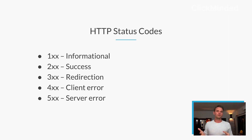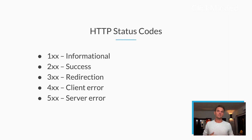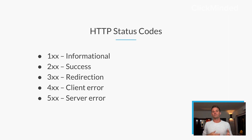The 100 block — these are informational requests. The 200 block — those are successful requests. The 300 block are going to be for redirects, redirection. The 400 block will be for client errors, and the 500 block will be for server errors.